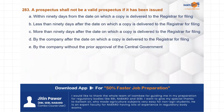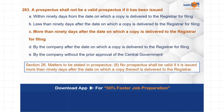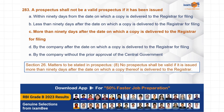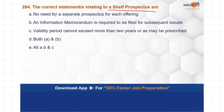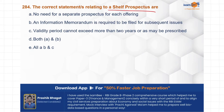Next question: a prospectus shall not be valid if it has been issued for more than 90 days after the date on which the copy is delivered to the registrar. C is the correct choice here — no prospectus shall be valid if it is issued for more than 90 days after the date on which the copy thereof is delivered to the registrar.